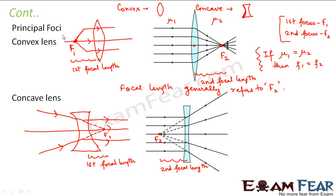You don't need to get confused with first and second focal length. Every lens has two focal points, F1 and F2, but whenever we talk about the focal length of a lens, we generally mean the second focal point F2. A convex lens is a converging lens and rays converge at F2. A concave lens is a diverging lens and rays appear to converge at F2.